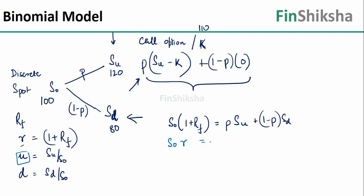Since Su is nothing but u · S₀, I can write this as p · u · S₀. Similarly, Sd is d · S₀, so the right-hand side becomes p · u · S₀ + (1 − p) · d · S₀. We can observe that S₀ is common throughout, so we can remove S₀ from all terms and try to solve the remaining equation.